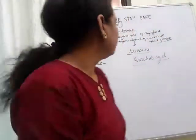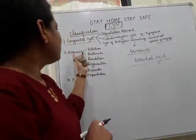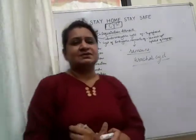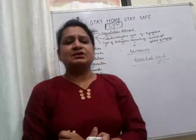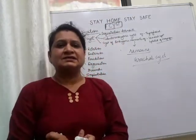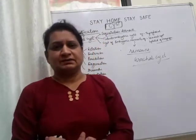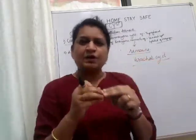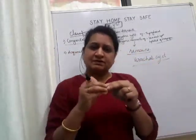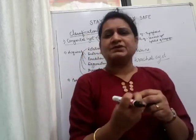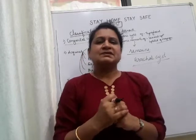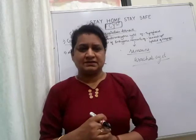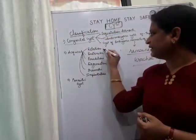Moving on to the next type: acquired cysts. The first is the retention cyst. These are caused by retention of secretions of glands resulting from blockage of a duct. When any duct gets blocked, a cyst forms due to that blockage — that is called a retention cyst. The best examples are sebaceous cyst, Bartholin cyst, and parotid cyst.